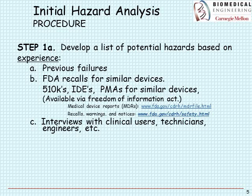The first step takes place early in the design process, around the same time you're creating user requirements. It involves developing a list of potential hazards. Initially, we create this list based on experience — for example, our experience with previous failures, or specific failures recorded by the FDA for similar devices. There are resources available through the Freedom of Information Act. We can also proactively create a list based on interviews with people experienced in that environment and technology.